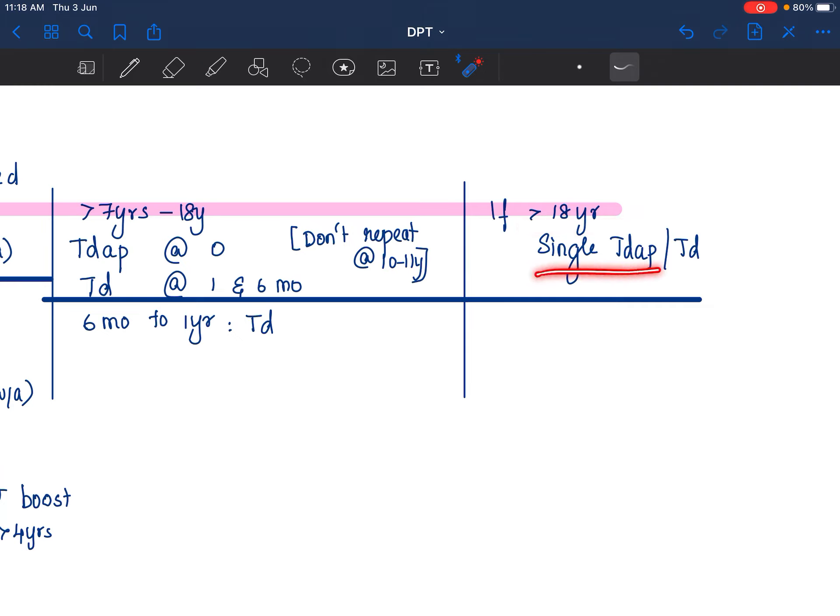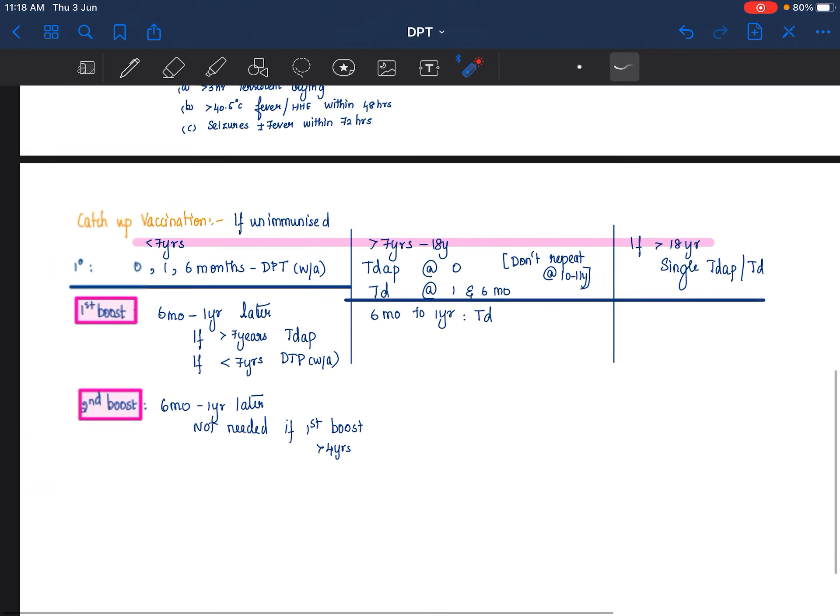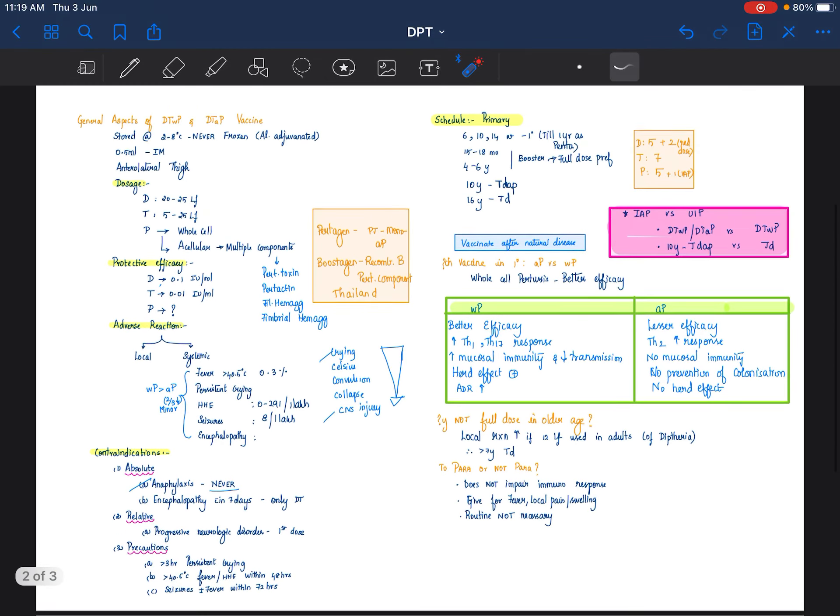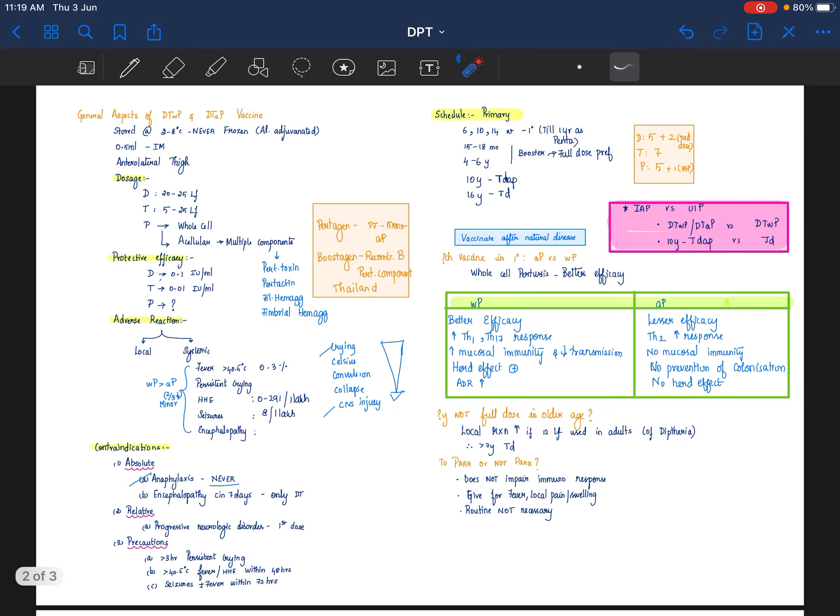So, this is how you are going to vaccinate a child who is coming to you without receiving any vaccination. So, suppose the child is partially immunized at any of this point, complete the rest of the doses that are pending.